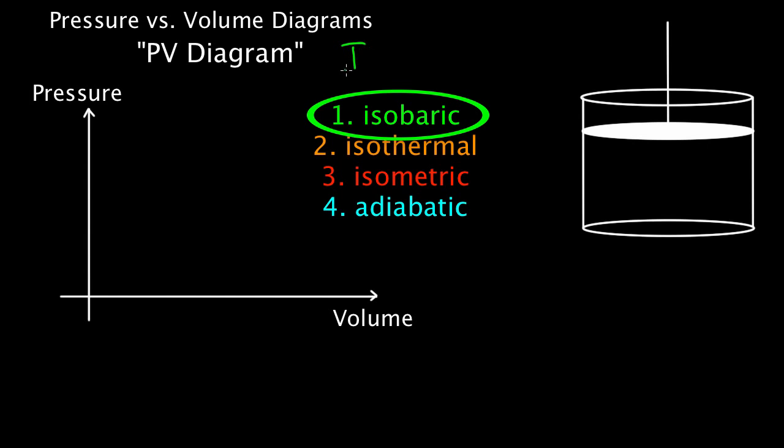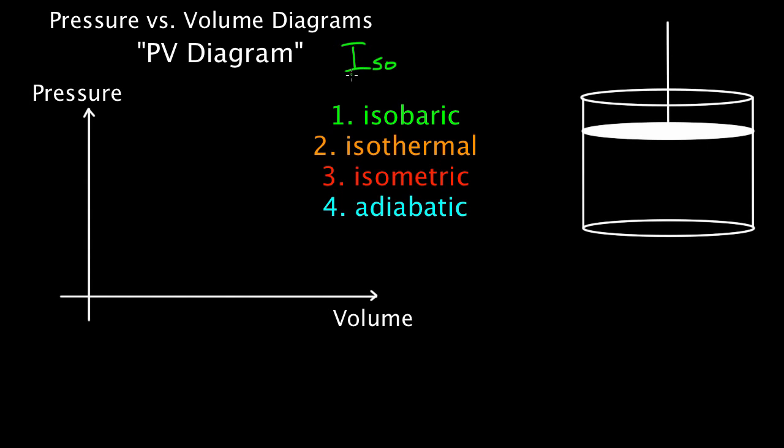The first one is called an isobaric process. Iso means constant. So whenever you see iso before something, it means constant whatever follows next. And this one's isobaric. Baric? Well, bar, that's a unit of pressure. So baric is talking about pressure. Isobaric means constant pressure. So how do you represent this on a PV diagram? Well, if you want to maintain constant pressure you can't go up or down. Because if I were to go up my pressure would be increasing. If I were to go down my pressure would be decreasing. The only option available is to go along a horizontal line.